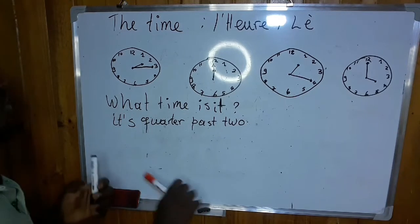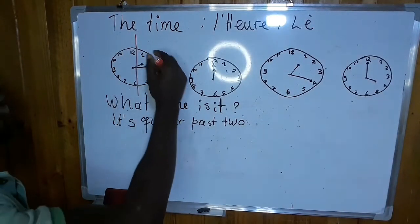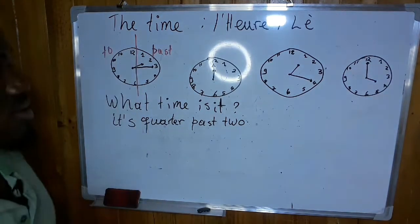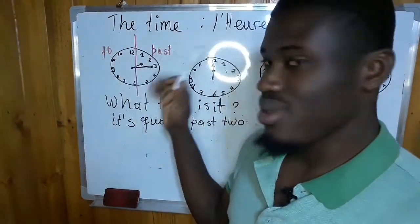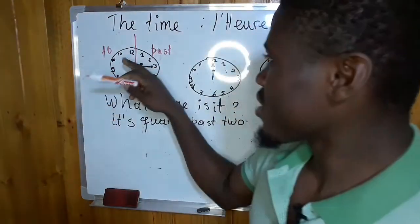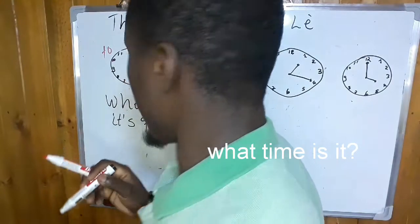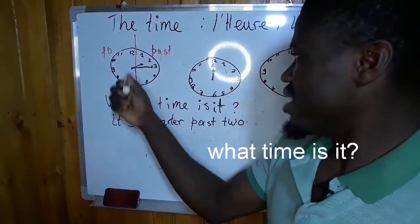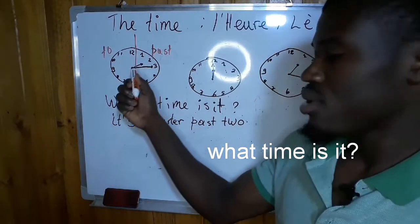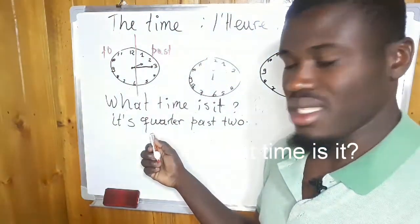So we are going to be able to separate: from 1 to 5, we say 'past'; and from 7 to 11, we say 'to'. Quarter — that is 15 minutes. You can say '15 minutes past' but it's better to use 'quarter past'. Quarter to — for example, 45 minutes past the hour, you say 'quarter to' the next hour.